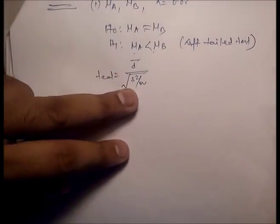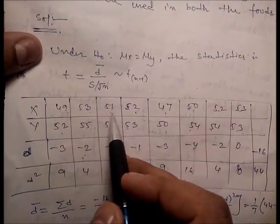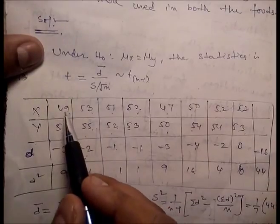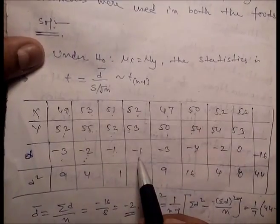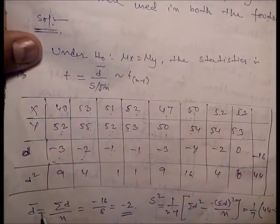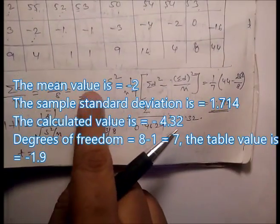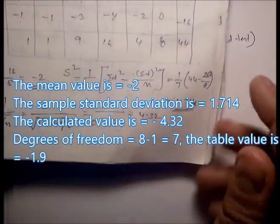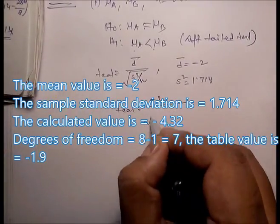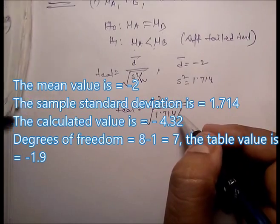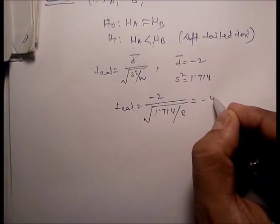We calculate d values as xi minus yi: 49 minus 52 equals -3, 53 minus 55 equals -2, 51 minus 52 equals -1, 52 minus 53 equals -1, and so on. The mean d_bar equals -2 and the variance s squared equals 1.714. Then t_cal equals d_bar divided by square root of (s squared / n) equals -2 divided by square root of (1.714 / 8), giving t_cal equals -4.32. n equals 8 animals.